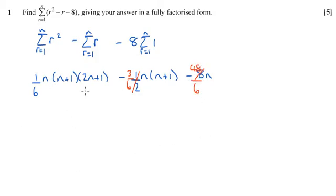So we can then take out a sixth n from each of our three terms, which is going to leave us with n plus one, two n plus one. It's going to leave us with three lots of n plus one. And it's going to leave us with minus 48.